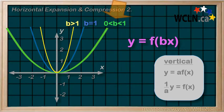If our b is between 0 and 1, then the reciprocal, or the multiplier, is now greater than 1, and we have a horizontal expansion.